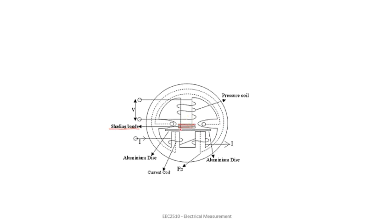Adjustment can be done by moving the shading bands along the axis of the limb — either upward or downward. As the shading bands are moved up the limb they cover more flux, resulting in greater values of induced EMF, current, and MMF produced by the shading bands. When moved down, the MMF decreases and the lag angle is reduced. The adjustment is made so that delta equals 90 degrees.